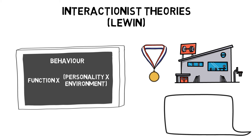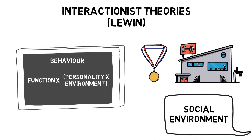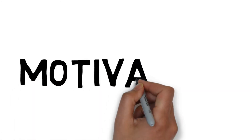Social environment is how the behavior and expectations of others affect us — for example, arguing with a referee because the rest of the team do it. Motivation is a cause of behavior that affects the direction and intensity of an individual's effort. Therefore, motivation is directly linked to personality.